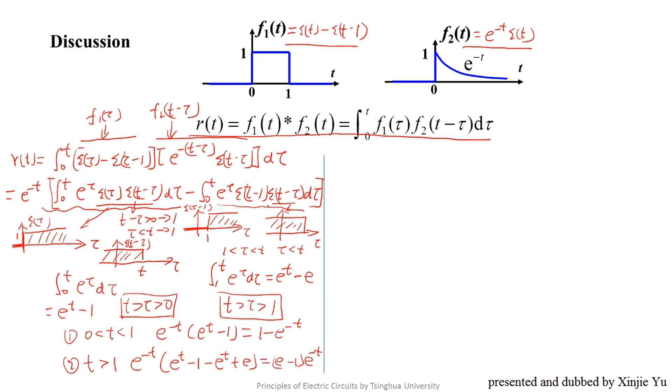Next, we will use the graphic method to solve the problem. We draw the graphs of f1(tau) and f2(t minus tau) both. Firstly, the graph of f1(tau) is like this.